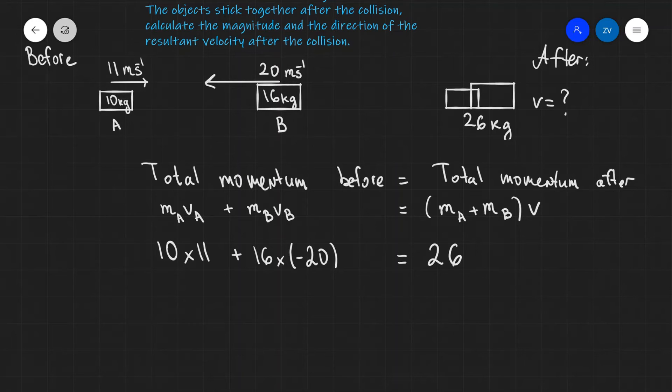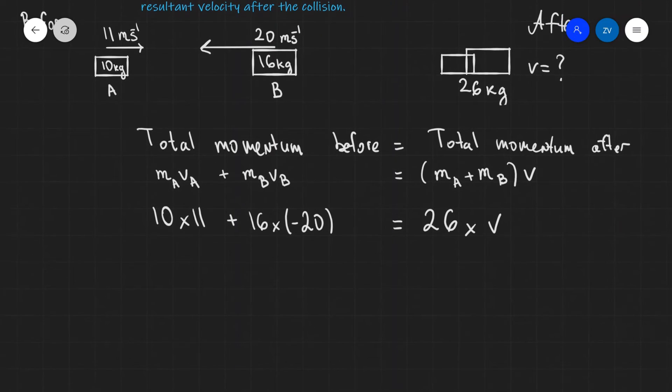Now we can directly rearrange for our final speed v, which will be equal to 10 times 11 minus 16 times 20. I'll just put the minus sign from the bracket over here, and we will need to divide this expression by 26. If we put this into a calculator, we're going to get minus 8.1 meters per second.